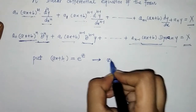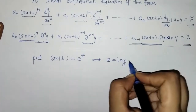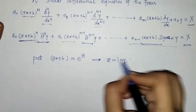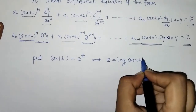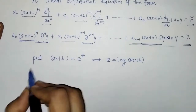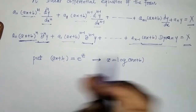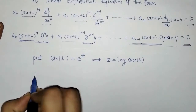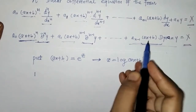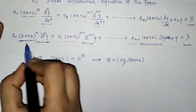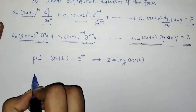From this substitution, z equals log(ax + b). Here a and b are constants. The differential equation is originally in variable x, and by doing this substitution it will convert to a differential equation in variable z. We need to find the values of the operator expressions.